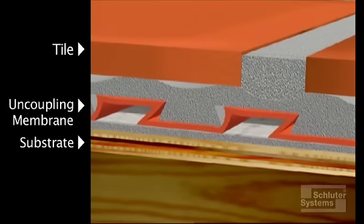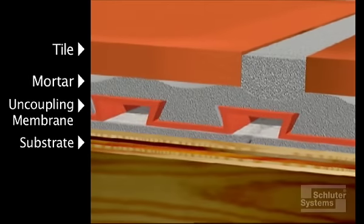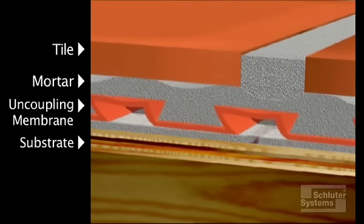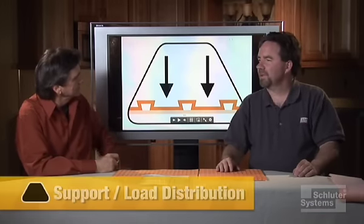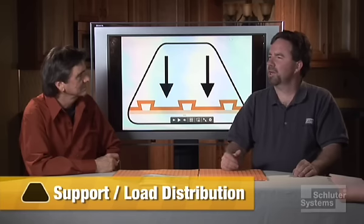The DITRA provides uncoupling through its open rib structure. It neutralizes movement stresses between substrate and tile caused by changes in temperature and moisture, and this eliminates a major cause of cracking and delaminating of the tile surface.